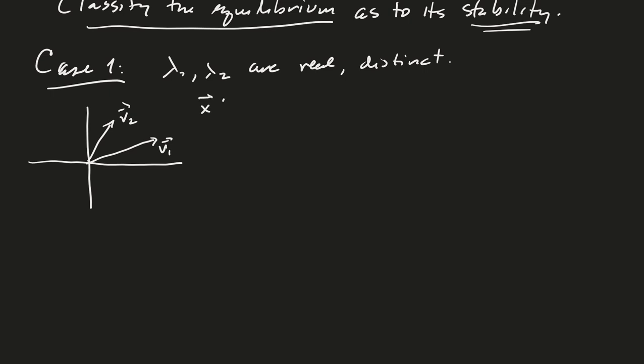And so in this case, right, we know that our solution is X of T equals C1 e to the lambda one T V1 plus C2 e to the lambda two T V2. Now, remember where the T's are. The T's are only in the exponential function. The vectors V here are constant vectors, right? So the only thing changing in time is the exponential function.